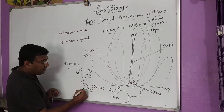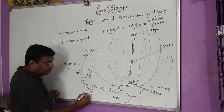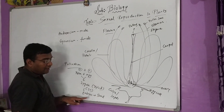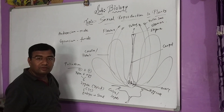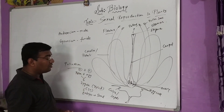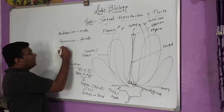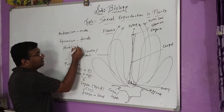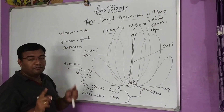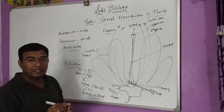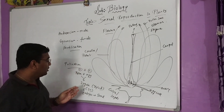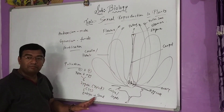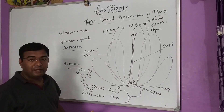This zygote will develop into an embryo, the embryo will develop into a new seed, and the seed will again develop into a new plant. This process is termed fertilization — the fusion of two different gametes, male gamete with female gamete, to form a zygote. The zygote is a diploid cell, which forms an embryo, the embryo develops into a seed, and the seed into a new plant.